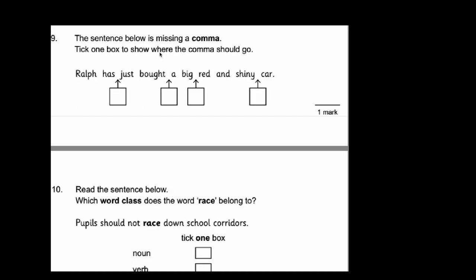Number 9. The sentence below is missing a comma. Tick one box to show where the comma should go. Ralph has just bought a big red and shiny car. The obvious thing that's standing out to me is this noun phrase here: a big red and shiny car. Now because it's a list and there's a lot of adjectives there describing the car, you should know that if you've not got an 'and' we need to make sure we've got a comma. It's a list. So this is where the comma should go.